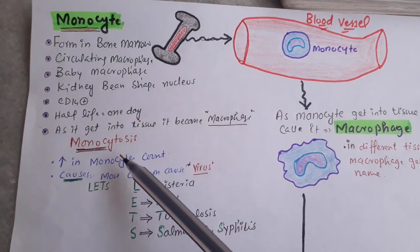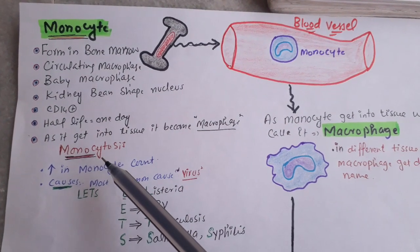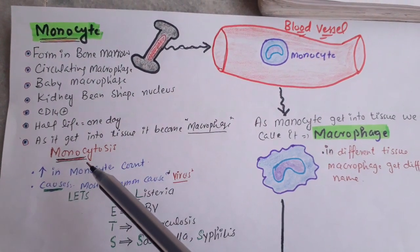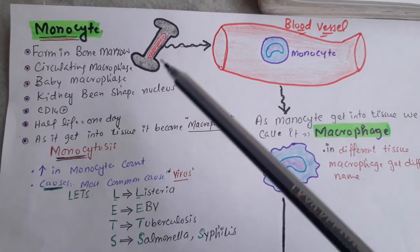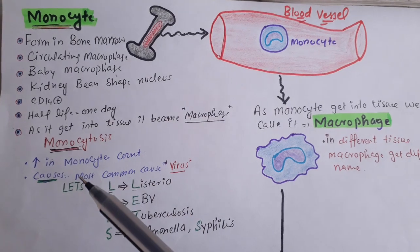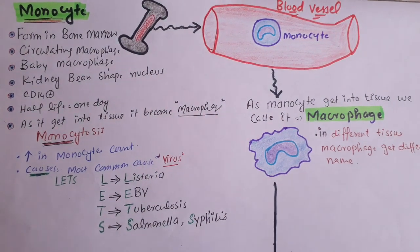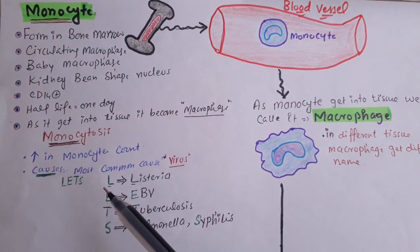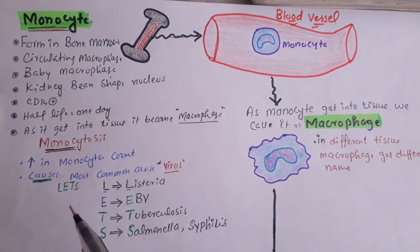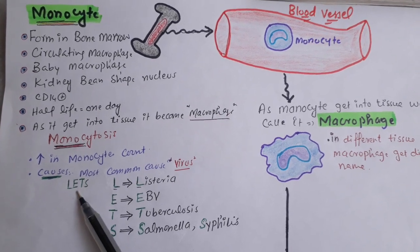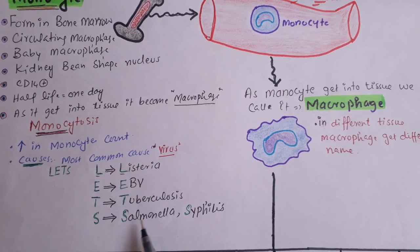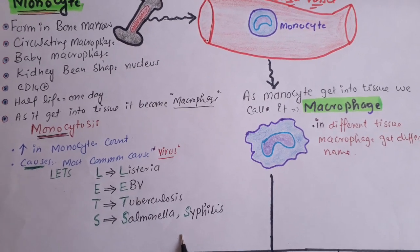The normal count of monocytes is 5%. If it increases more than 5%, we call it monocytosis — 'cytosis' means increase. The most common cause of monocytosis is a virus. If the monocyte count increases more than 15%, that is called extreme monocytosis. The causes can be remembered with LETS: L for Listeria, E for Epstein-Barr virus, T for tuberculosis, S for Salmonella and Cephalus.